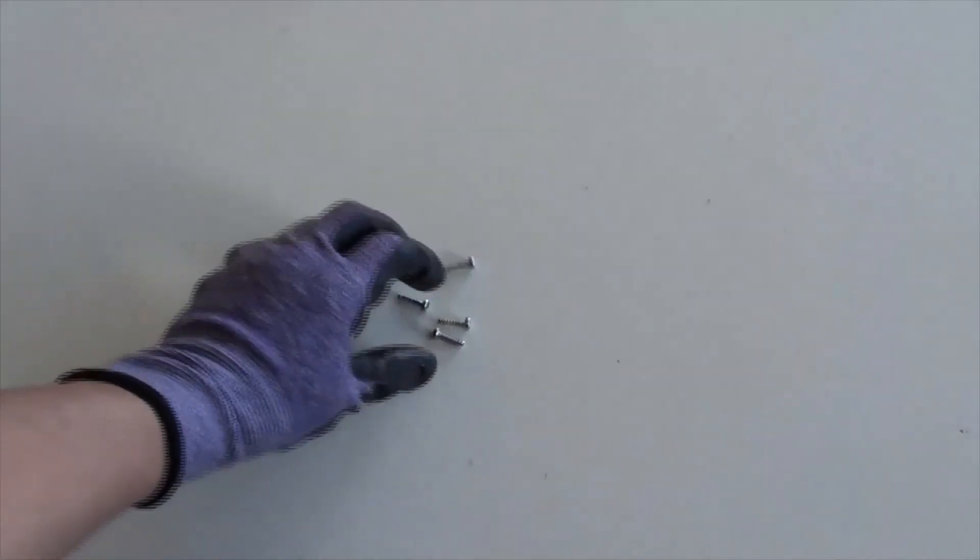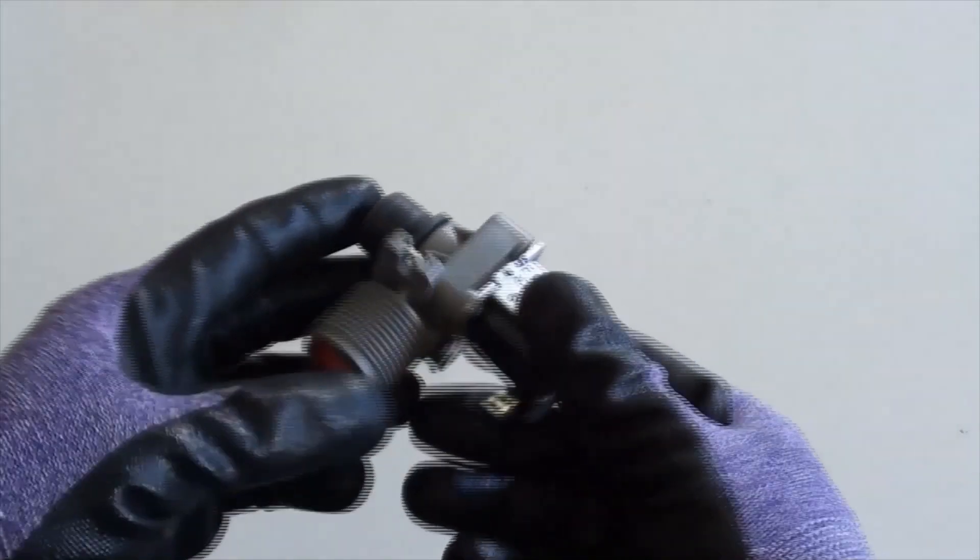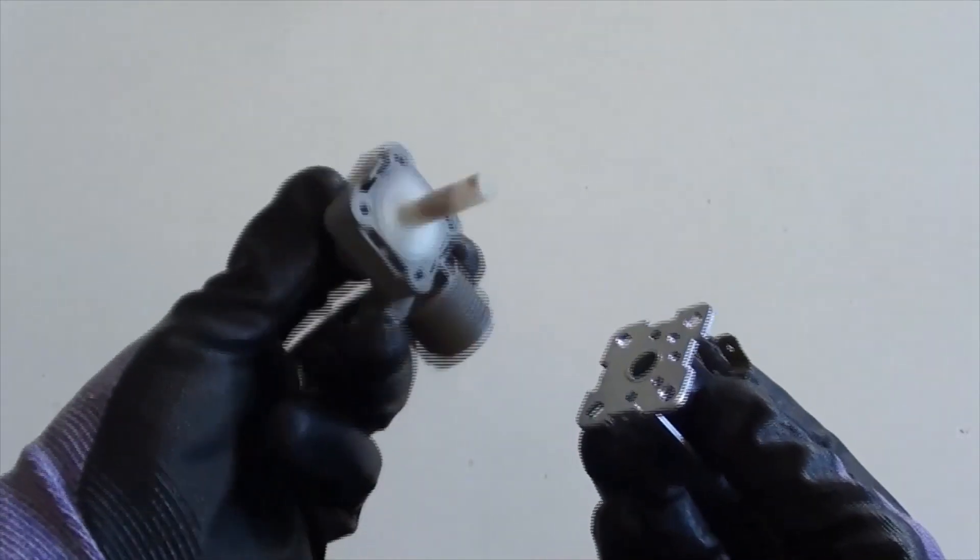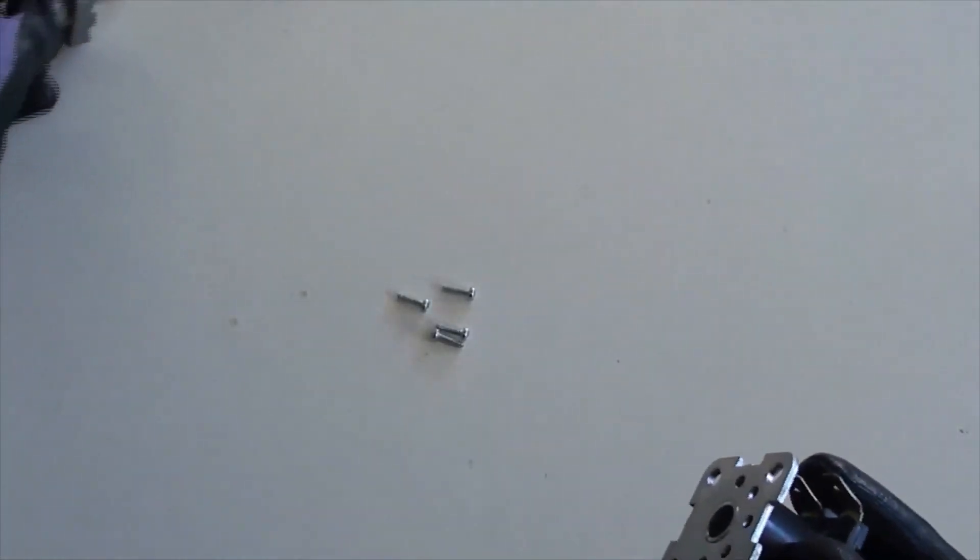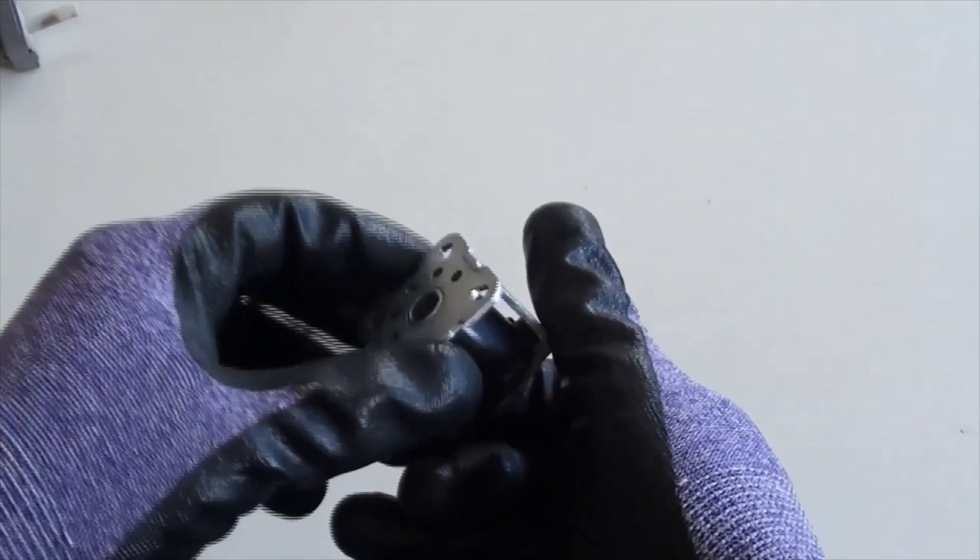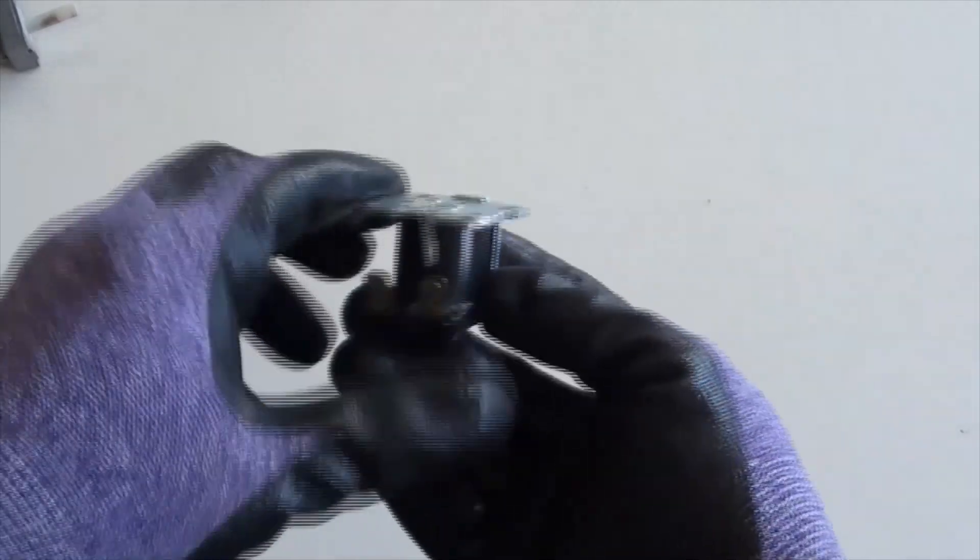Four screws are here. Pulling the water valve out. This black thing is a magnet solenoid. That is all we need.